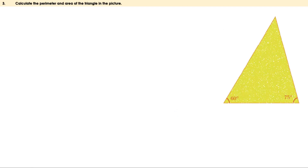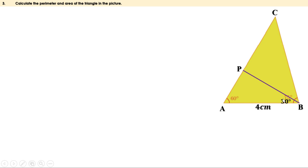Now let us look at our problem. Let the triangle be ABC. Draw a perpendicular from vertex B to side AC, meeting at P. Then angle P is 90 degrees. Since angle A is 60 degrees, angle ABP is 30 degrees. Therefore this is a 30-60-90 triangle with hypotenuse 4 centimeters, so the sides are 2 centimeters and 2 root 3 centimeters. The smallest side is opposite to the smallest angle (30 degrees), therefore BP is 2 centimeters and AP is 2 root 3 centimeters.